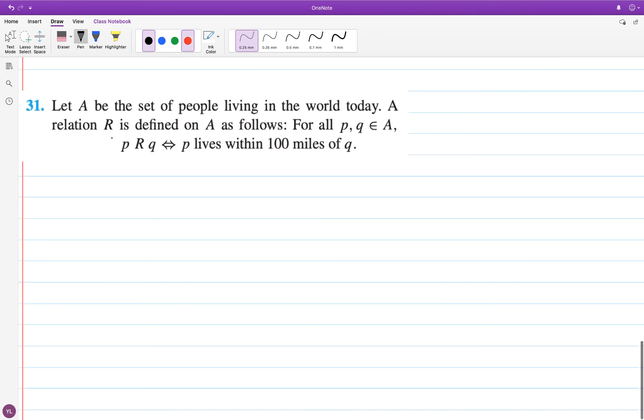The set is all the people living in the world. And we're going to define a relation on that set. P is related to q if p lives within 100 miles of q. So go ahead and see if you can figure out whether this relation is reflexive, symmetric, or transitive. Pause the video and come back. Reflexive? Yes. Everybody lives within 100 miles of themselves. Yes, each person lives within 100 miles of themselves.